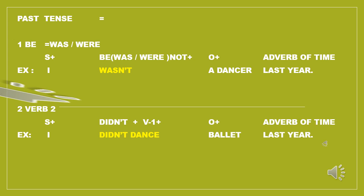For the main verb negative: 'I didn't dance last year.' Here, 'I' is the subject, the auxiliary or helping verb 'did' combined with 'not' forms 'didn't', 'dance' comes from verb 1 (base form), 'ballet' is the object, and 'last year' is the adverb of time.